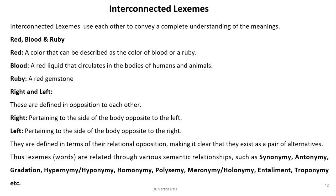Thus, lexemes are related through various semantic relationships such as synonymy, antonymy, gradation, hypernymy, hyponymy, homonymy, polysemy, meronymy, holonymy, entailment, troponymy, and more. We need to store all such information for each word so we can disambiguate it for a particular sense.